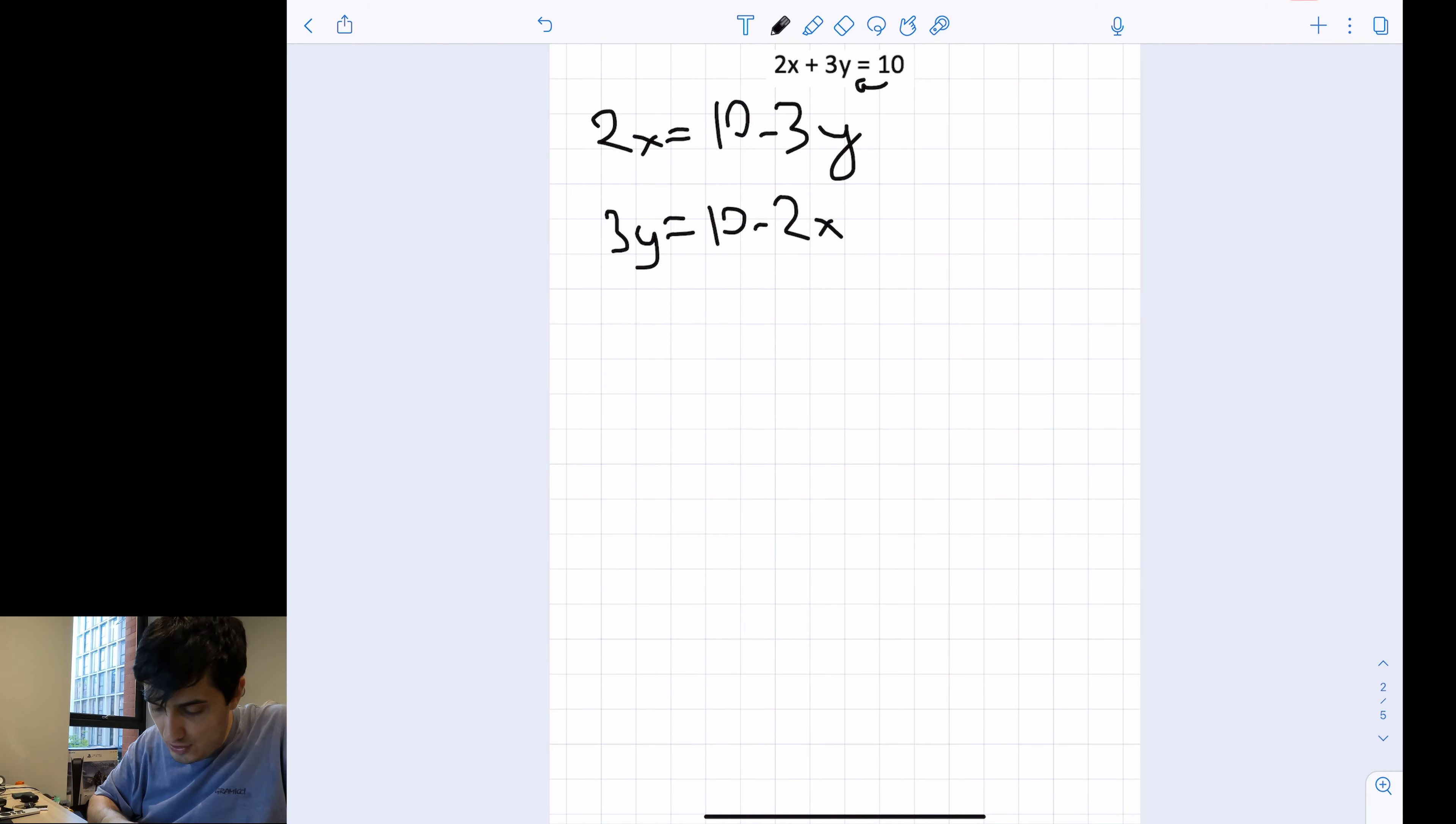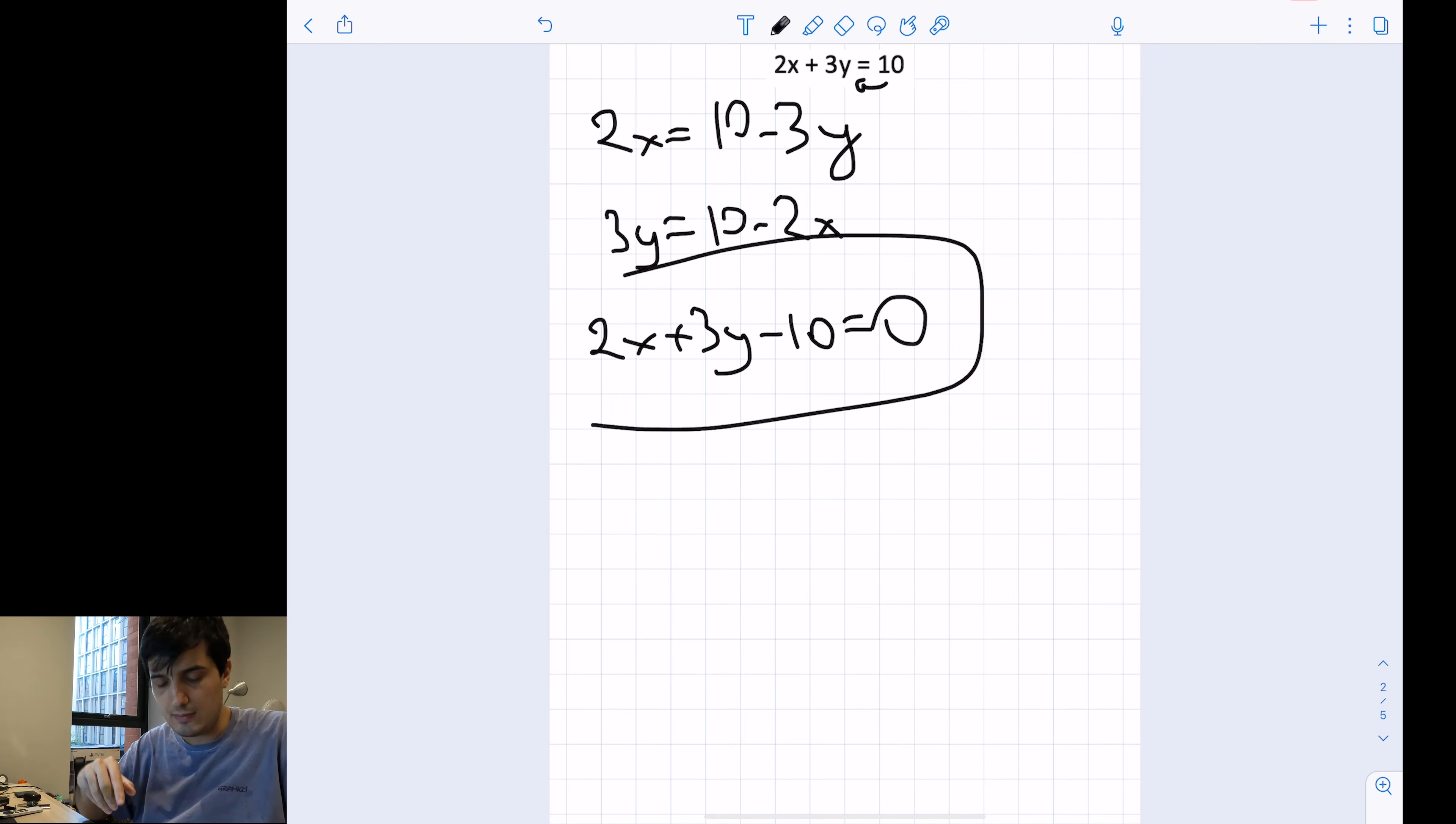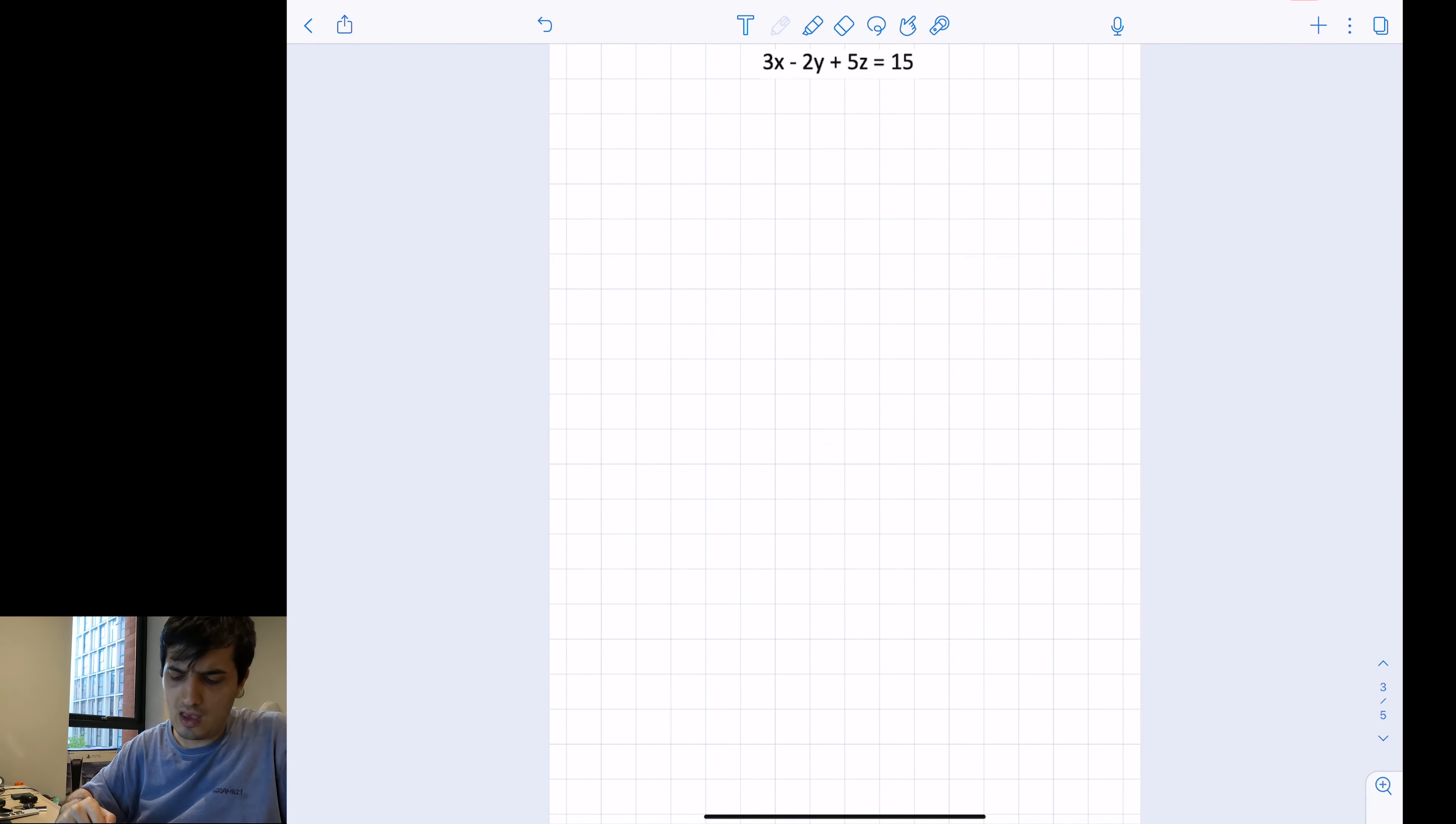One final way of doing it: you can just take the 10 to the left-hand side and have 2x plus 3y minus 10 will equal zero. You can possibly make it a little bit simpler if you work hard on this, but again, two unknowns, one equation - not solvable. I want you to get familiar with it.